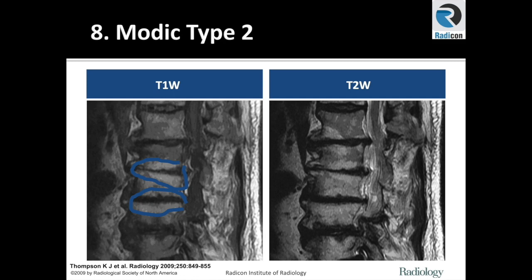Let's look at this case. T1 images on the left and T2 weighted images on the right both show hyper-intense or bright end plates, which is Modic Type 2 change. If it's bright on both T1 and T2, it is a Type 2 change, representing fatty replacement following prior inflammation seen in Type 1 changes. In Type 3 changes, end plates appear dark and hypo-intense, representing sclerosis after the initial phase of inflammation, then fatty replacement, and the final stage of sclerosis.